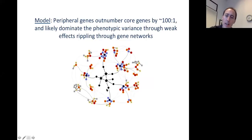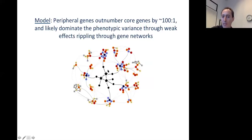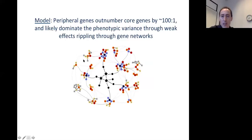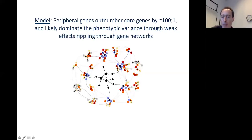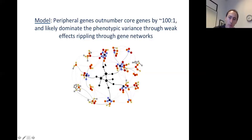SNPs that regulate or lie within core genes may generally have bigger effects than those near peripheral genes. However, if we imagine there are a modest number of core genes — say, a hundred — then in a typical cell type expressing more than 10,000 genes, there might be a hundred peripheral genes for every core gene. The sheer number of peripheral genes means they tend to dominate the phenotypic variance through weak effects that ripple through gene regulatory networks in cells.